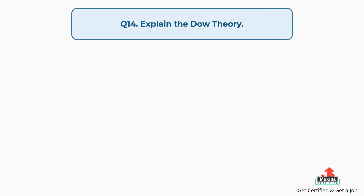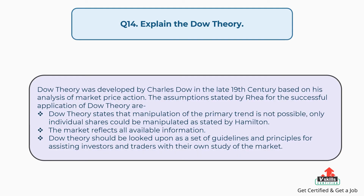Question number 14: Explain the Dow Theory. Dow Theory was developed by Charles Dow in the late 19th century based on his analysis of market price action. The assumptions stated for the successful application of Dow Theory are: firstly, the Dow Theory states that manipulation of the primary trend is not possible — only individual shares could be manipulated as stated by Hamilton; secondly, the market reflects all available information; thirdly, Dow Theory should be looked upon as a set of guidelines and principles for assisting investors and traders with their own study of the market.